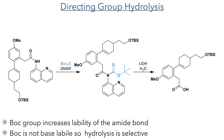With this bond construction complete, the directing group was then hydrolyzed in a two-stage process. First, a Boc group was added to the amide nitrogen, which makes the amide more electrophilic and therefore easier to hydrolyse. As the Boc group is not base labile, this ensured that the carbon-nitrogen bond was selectively hydrolyzed over the amide ester bond.